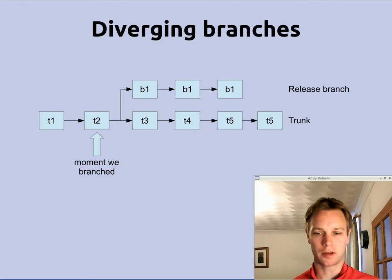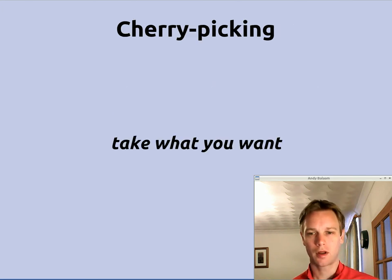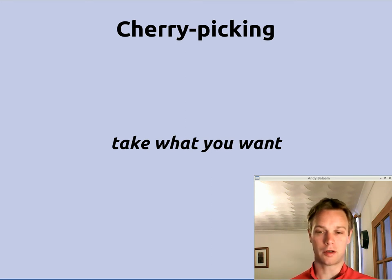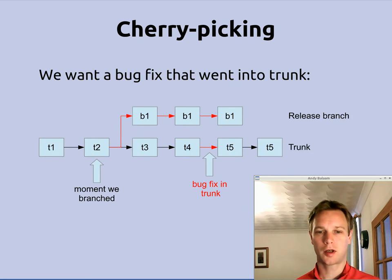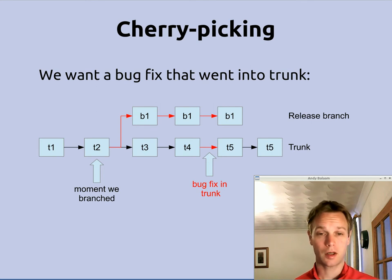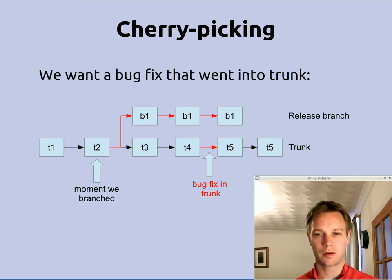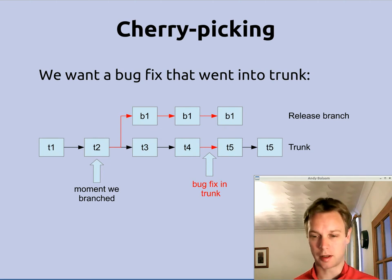When you use Git you will probably find you use branches a lot more than you would in some systems. So first of all let's talk about cherry picking. Let's imagine a situation where we want to take one change from the middle of the work that happened in one branch and also have it on another branch. The arrows that are red are bug fixes. We fixed some bugs in that release branch, and also as part of our normal work in trunk we fixed a bug between T4 and T5. That bug fix is also relevant to the release — so we want to pick up that change and have it available in the branch, and that is called cherry picking in Git's terminology.